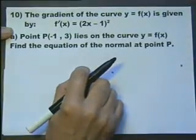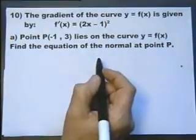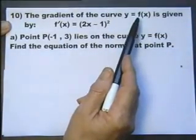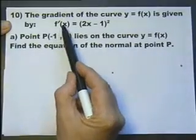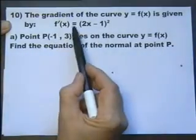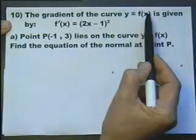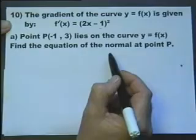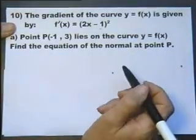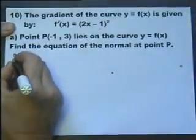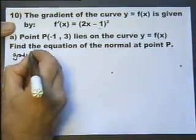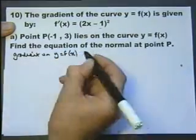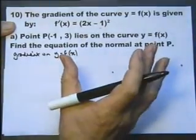Not the whole question there, but this is the whole of part A. The gradient of a curve of the type y equals a function of x is given by f'(x) equals this. So this is the gradient on a particular curve. If the point P lies on that curve, find the equation of the normal at the point P. So we know the gradient on the graph. Writing down a few thoughts to help understand the question — especially in the exam, you need to get your head around the question.